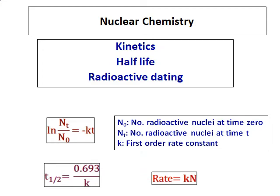We have one more equation where the rate is directly proportional to the number of nuclei at any time, so rate equals kN. We will be using these equations to solve a few problems in nuclear chemistry.